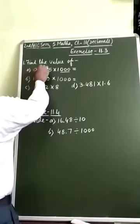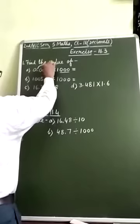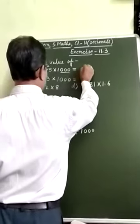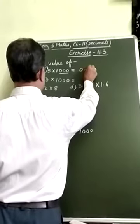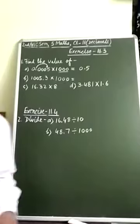The decimal point is here. If it moves three digits, it will come before five. So, answer will be 0.5.